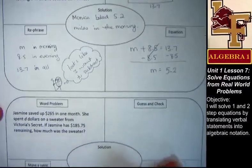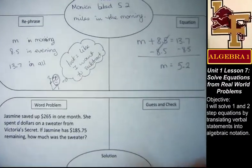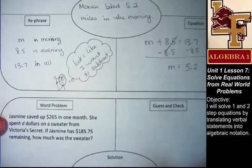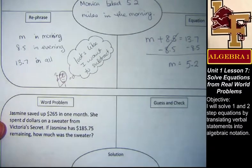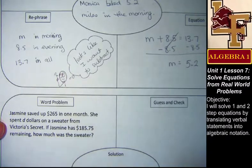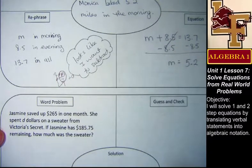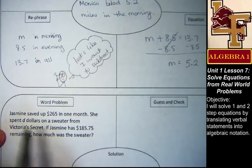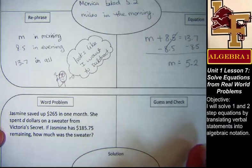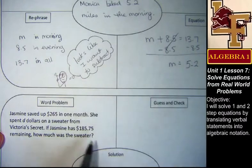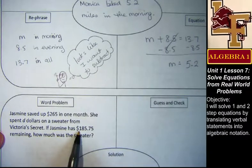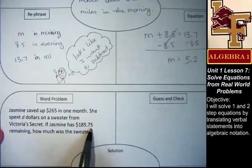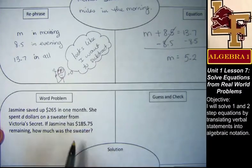Let's look at three more different types of problems. I have Jasmine. Jasmine saves up $265. She's my hero because I can't even save like 20. So she saves up $265 in one month and then she spends, I don't know how many dollars. That's what the d stands for. She spends that many dollars on a sweater from Victoria's Secret. So if Jasmine has $185.75 left after buying her sweater, how much was the sweater?